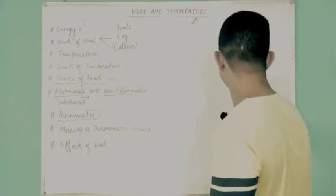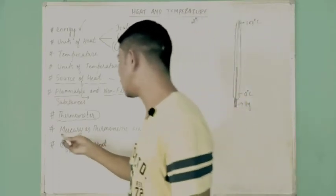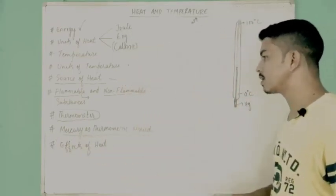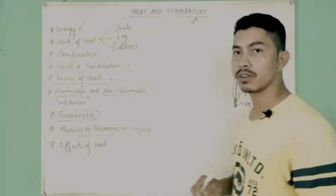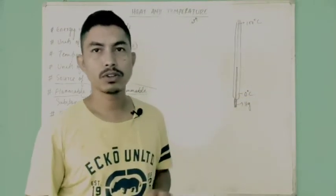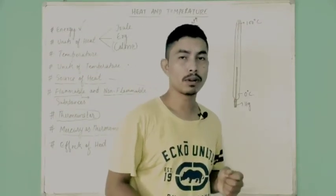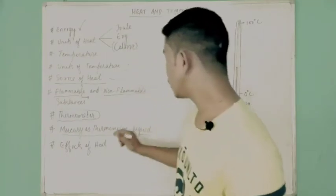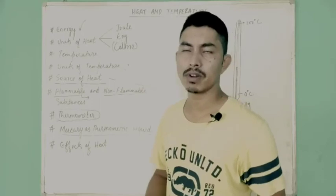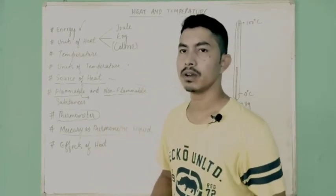Why do we use mercury as a thermometric liquid? Mercury does not stick to the glass, it does not evaporate easily, and it is opaque — so it is clearly visible inside the capillary. Mercury is also available in pure form. There are many reasons for using mercury in a thermometer, which you may also read about in your textbook.